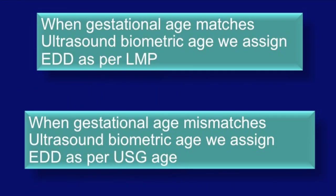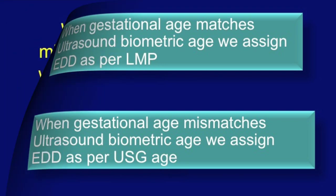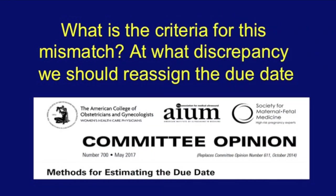Whenever the gestational age matches the ultrasound biometric age, we assign the EDD as per LMP. When the gestational age mismatches the ultrasound biometric age, we assign the EDD as per the ultrasound age. So what are the criteria for mismatch? At what discrepancy should we reassign the due date? Is it different at different gestational ages? We will look at that.